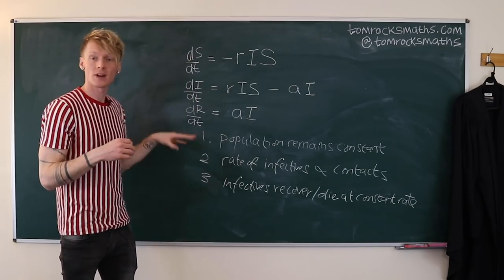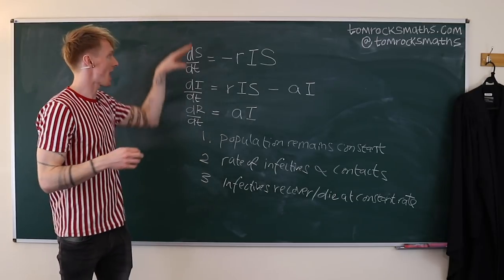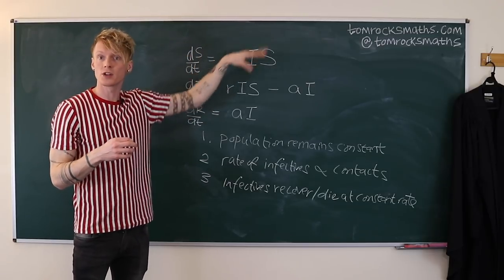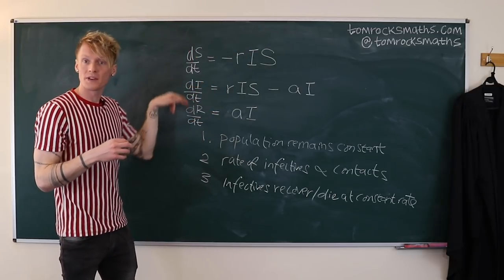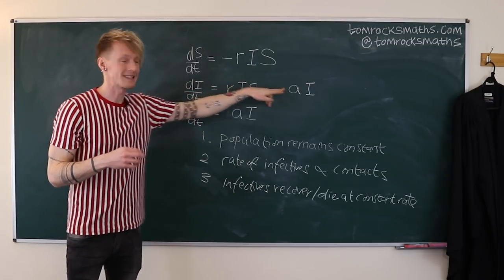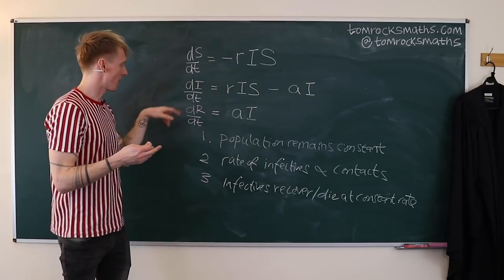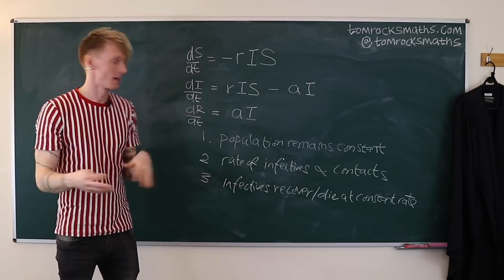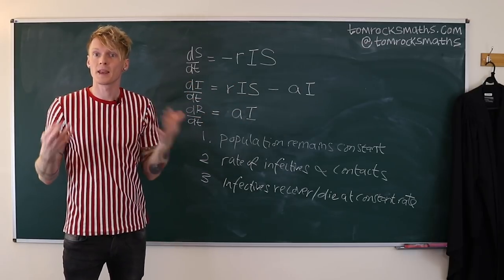We now have three differential equations for our three categories. The number of susceptibles S decreases according to contact between infectives and susceptibles. The number of infectives I increases due to that contact and decreases from people recovering or dying. And the removed category R increases at the constant rate a times the number of infectives.